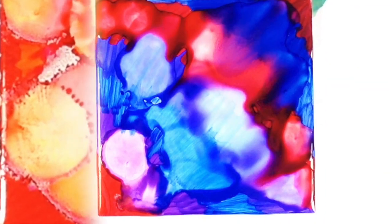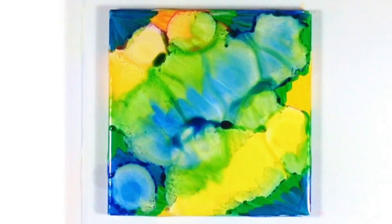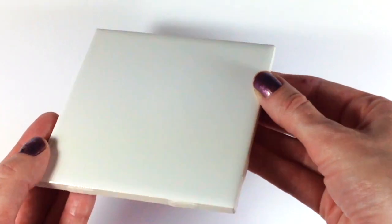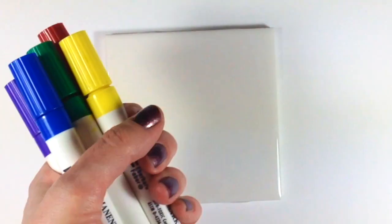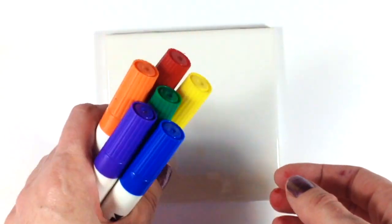I'm going to show you how to create tile artwork using permanent markers and rubbing alcohol. The first thing you'll need is a plain white tile that you can get at most hardware stores, and then you'll need some colored permanent markers.